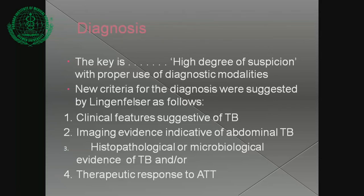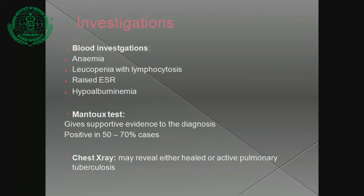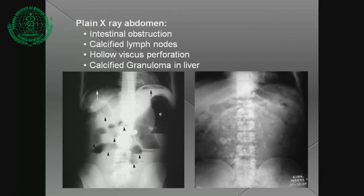Diagnosis: the key is a high degree of suspicion with proper use of diagnostic modalities. The criteria of diagnosis include: clinical features suggestive of tuberculosis, imaging evidence indicative of abdominal tuberculosis, histopathological or microbiological evidence of tuberculosis, and/or therapeutic response to anti-tuberculosis treatment (ATT). Blood investigations may show anemia, leukopenia, lymphocytosis, raised ESR, hypoalbuminemia. Chest X-ray should be done. Plain X-ray abdomen may show intestinal obstruction, calcified lymph nodes, hollow viscous perforation, or calcified granuloma in the liver.